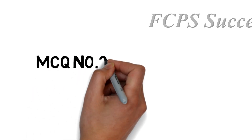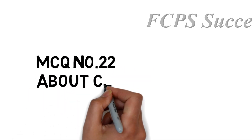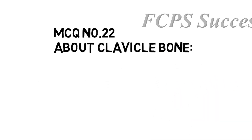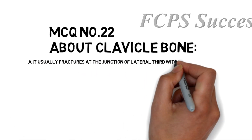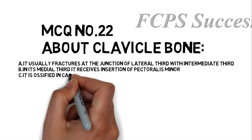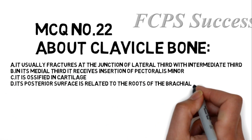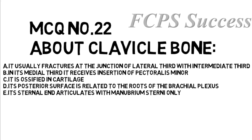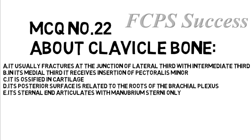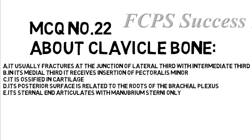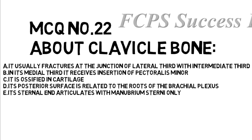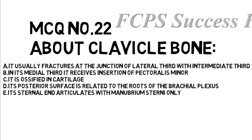Question number 22 is about the clavicle. Option A is it usually fractures at the junction of the lateral third with the intermediate third. Option B is in its medial third it receives the insertion of pectoralis minor. Option C is it is ossified in cartilage. Option D is its posterior surface is related to the roots of the brachial plexus. Option E is its external end articulates with the manubrium sterni only.